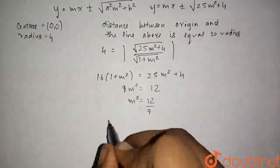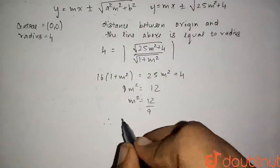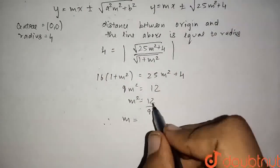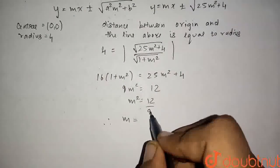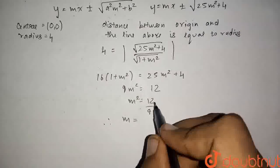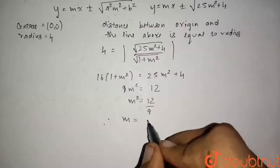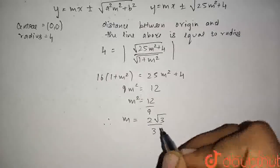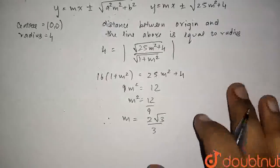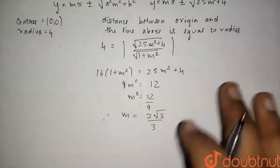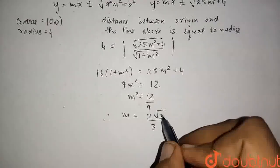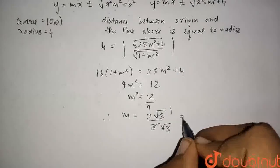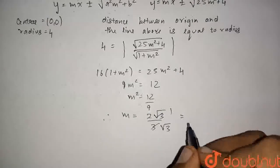Therefore m = √(12/9). Since √9 = 3 and √12 = 2√3, we get m = 2√3/3, which can also be written as 2/√3.